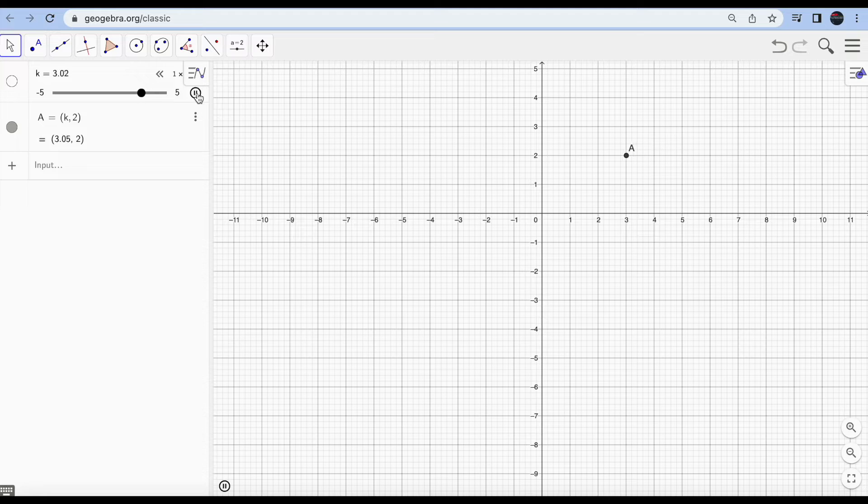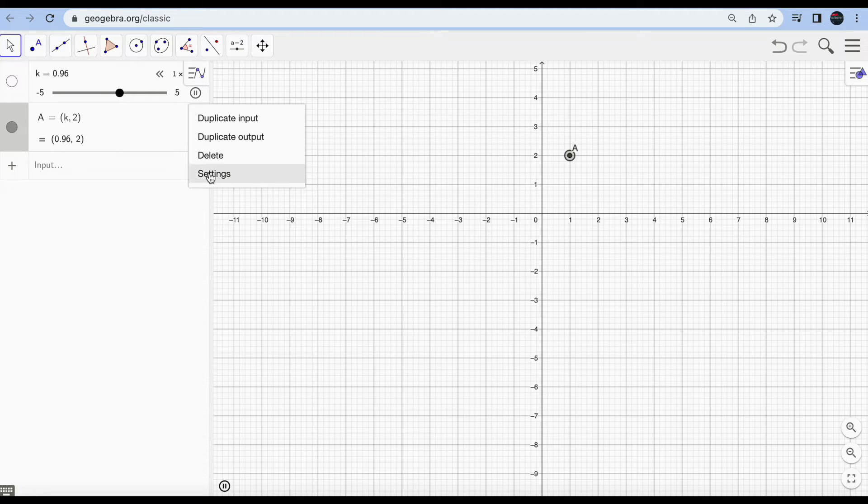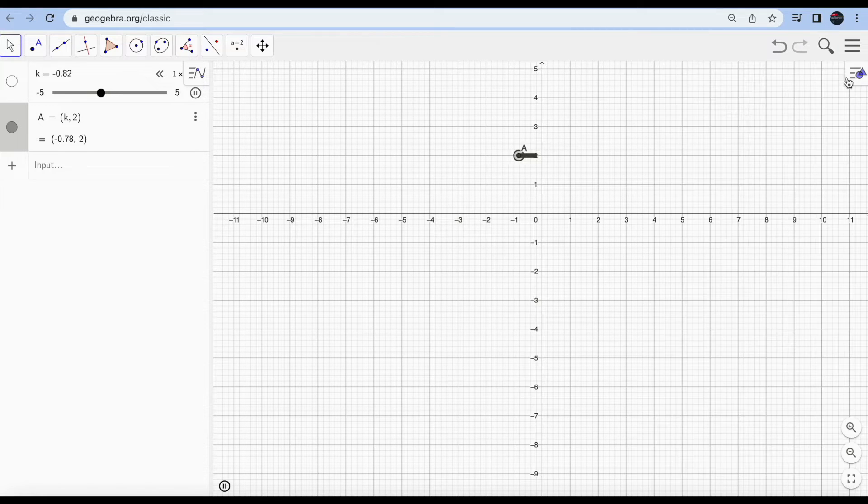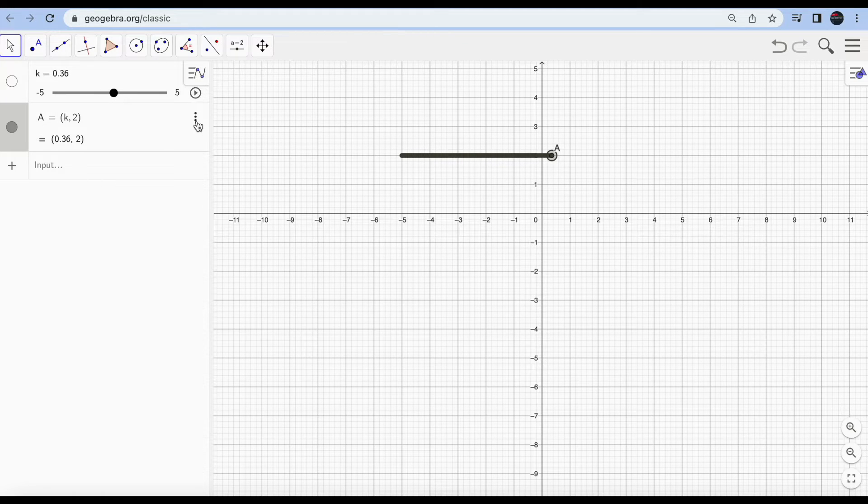If I just hit this play button, it's moving. This is your first animation. The beauty is, if you go to settings of point A and you click on show trace, then you will be able to see how it is moving from which point to which. So you have your first animation ready with just one click.